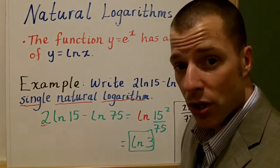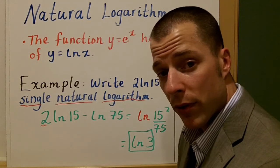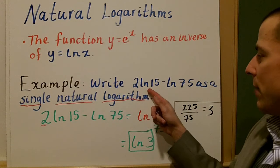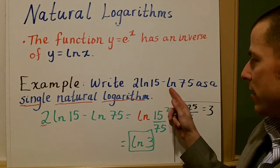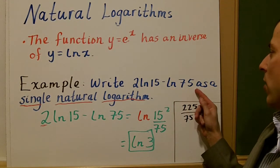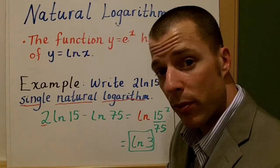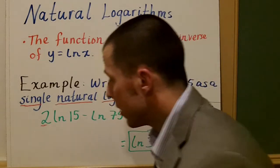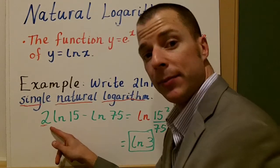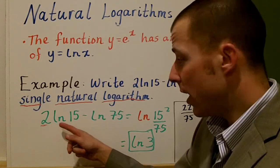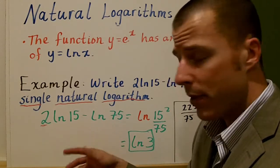Our first example: we're just going to apply the properties of logarithms to natural logs. What they want us to do here is 2 times the natural log of 15 minus the natural log of 75. We want to write that as a single logarithm. You're actually going to apply the quotient rule because we're subtracting two logarithms, and they're the same logarithms, natural log, same base e.